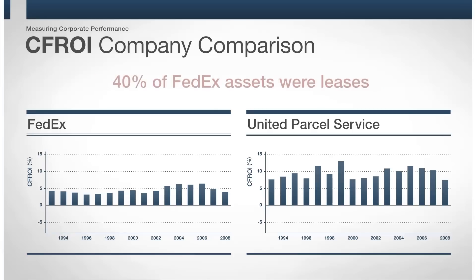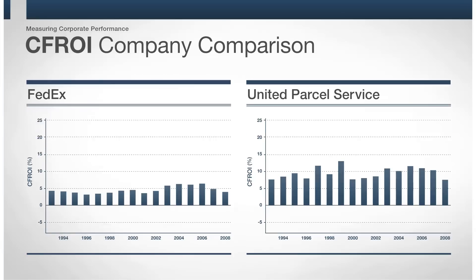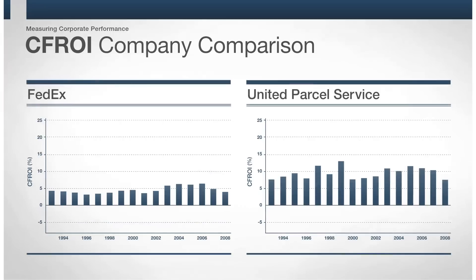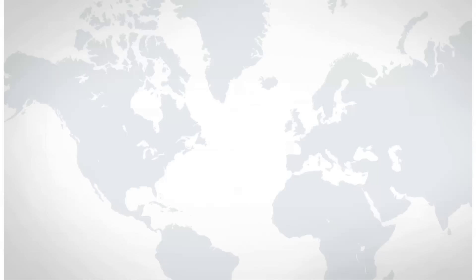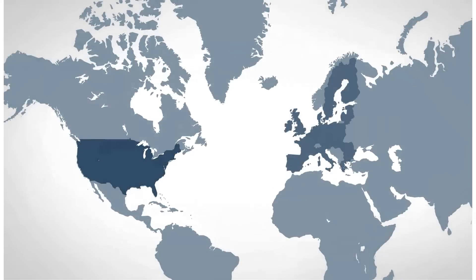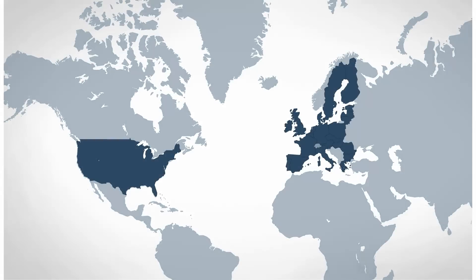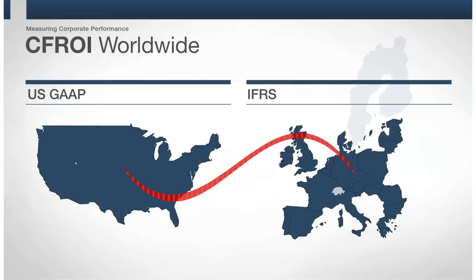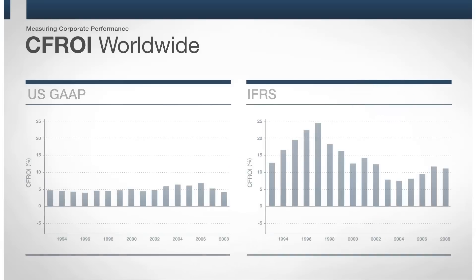Traditional accounting measures of performance don't include off-balance sheet leases in their calculations. By placing these leases back on the balance sheet, we remove the distorting effects of different financing choices, leading to a more accurate comparison. The modified balance sheet indicates that UPS earns a higher return on capital than FedEx. The CFROI metric also overcomes comparability issues amongst countries with different accounting standards. HALT users can feel confident knowing that the CFROI metric allows for comparisons around the world, such as between FedEx and UK Mail Group.